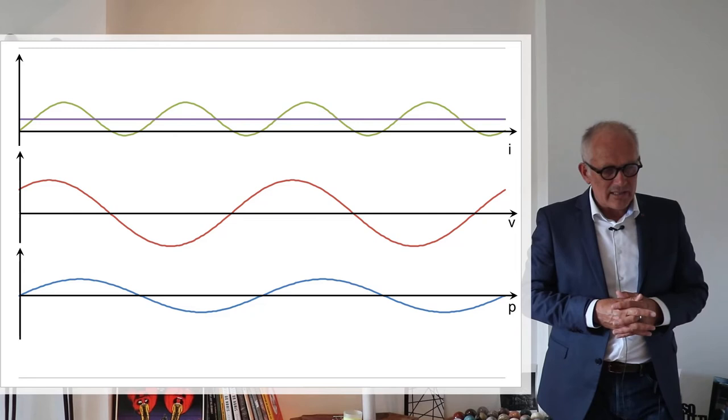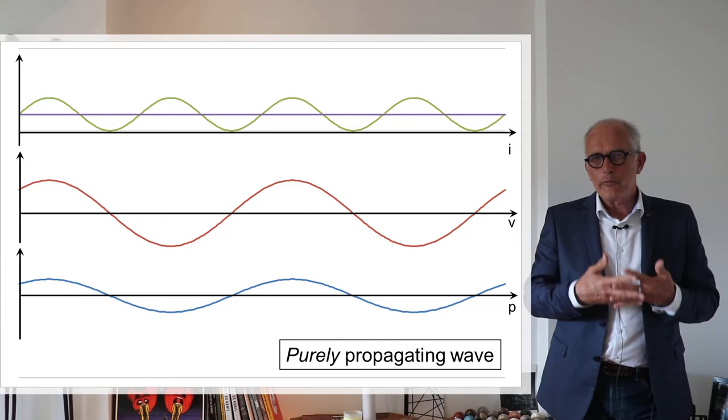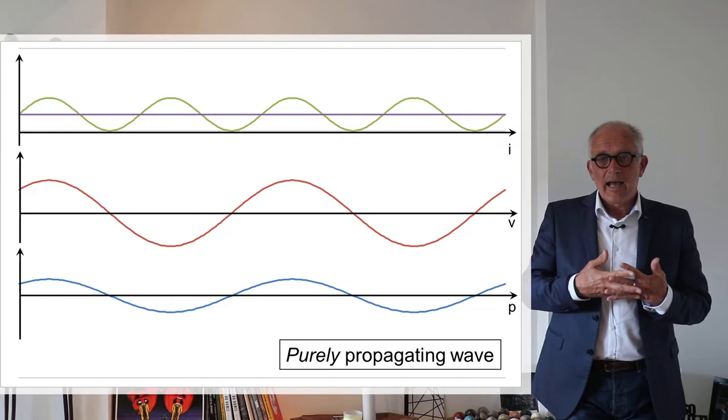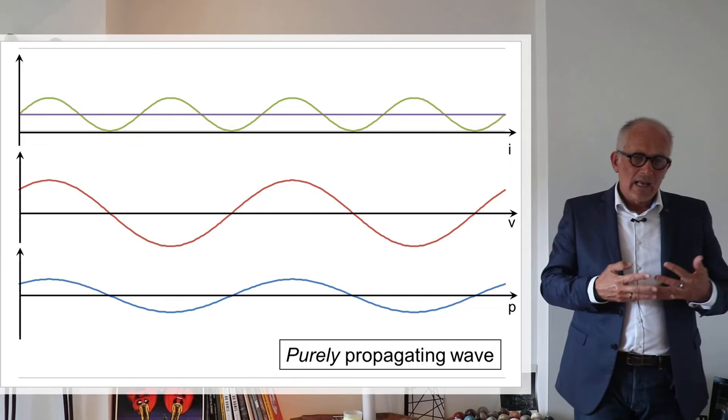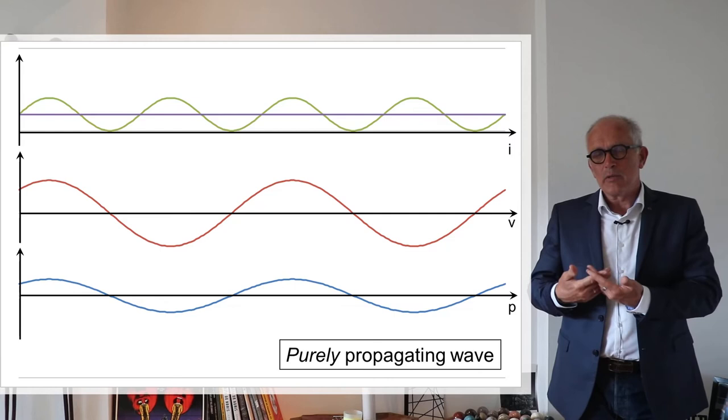Now let's look at two signals that are in phase. So the phase for the pressure and the phase for the velocity are identical. And there you see that the active intensity is maximum and the intensity is always positive, even if you take into account the fluctuating reactive components. This is called a purely propagating field. If you have a purely propagating wave, you will have a maximum intensity.